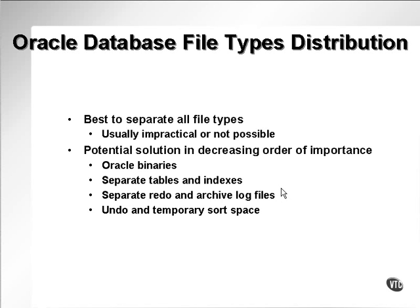In general, it's best to separate different file types. However, separating everything is usually impractical and not possible. When you have RAID array structures, it's not necessary because the RAID array does the splitting up — the striping and the mirroring — all by itself. It doesn't need any help.